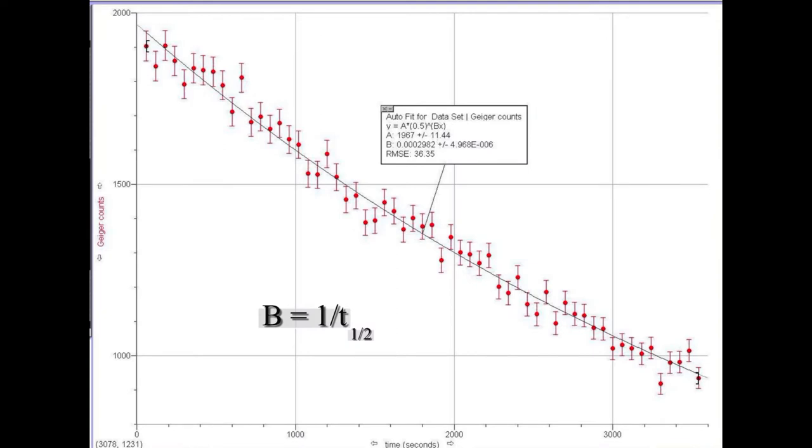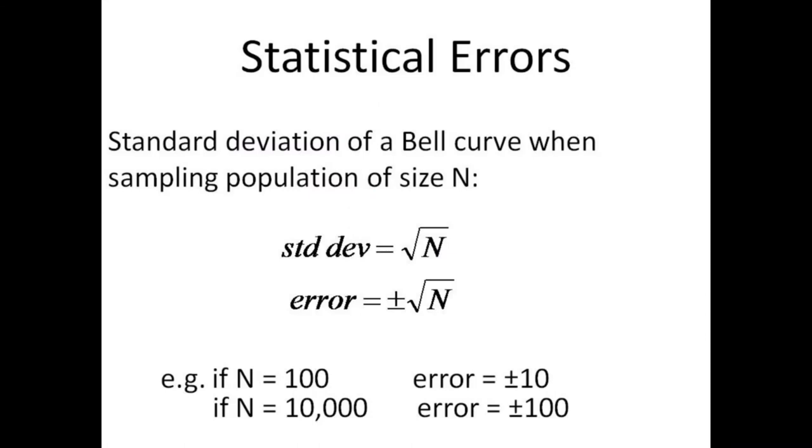Note that we have added error bars. The errors involved in a sampling process of this nature are expected to be equal to the square root of the total number present in the sample. If 100 counts are made, then we expect an error of plus or minus 10. If 10,000 counts are made, then the error is plus or minus 100.